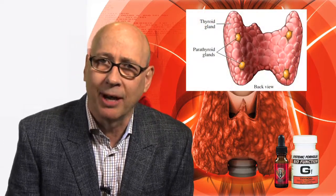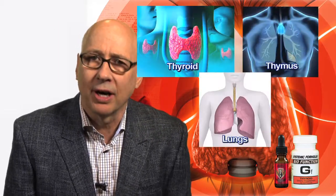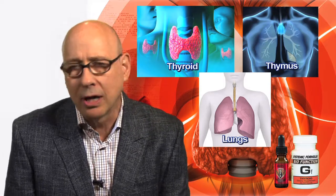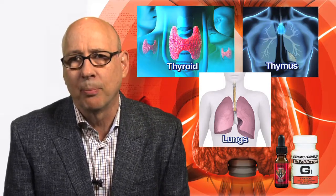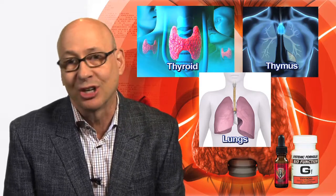In the GF thyroid formula, Doc designed it to support normal cellular processes via key botanical elements and tissue integrity factors for both the thyroid and the parathyroid processes. He also includes RNA-DNA cellular identity factors — for thyroid, thymus, and lung — to support thyroid tissue integrity and optimal metabolic function.